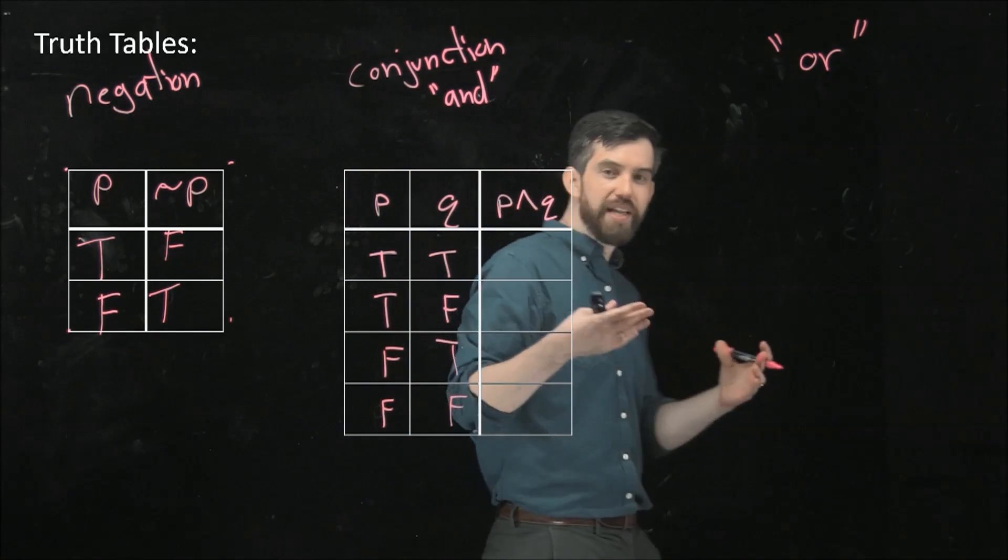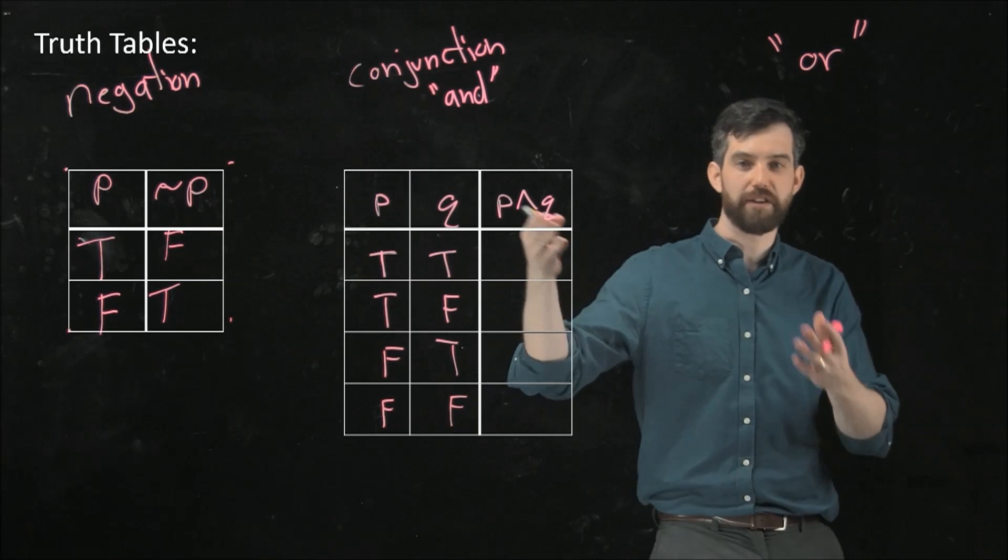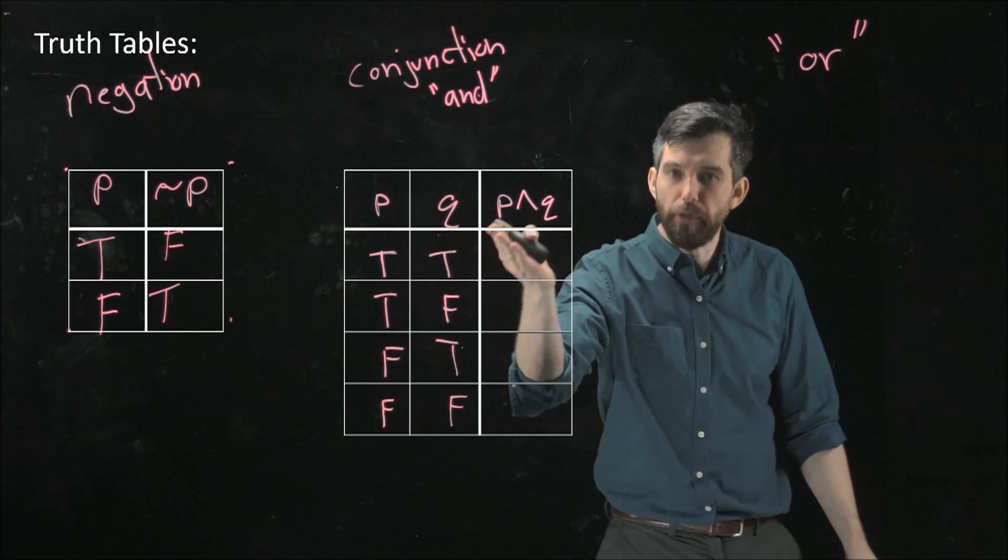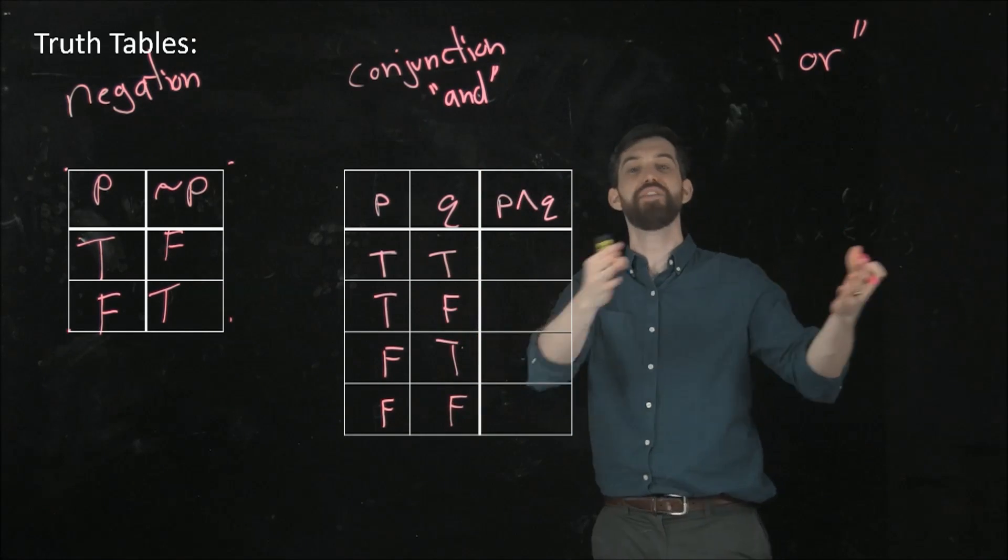All right. So these are my inputs. This is the possible truth and falseness of p and q. Now I want to look at p and q. In other words, I want to have both of these things being true. That's what it means to say and. I want one thing and the other being true.